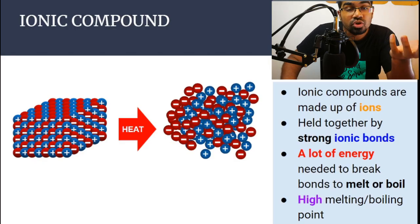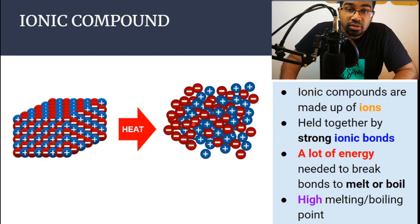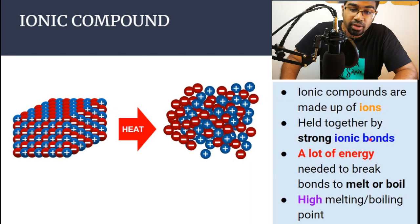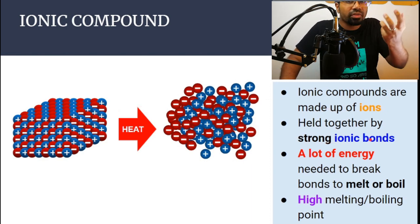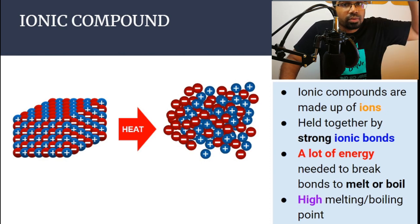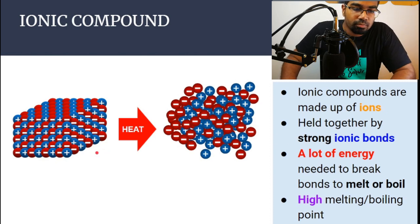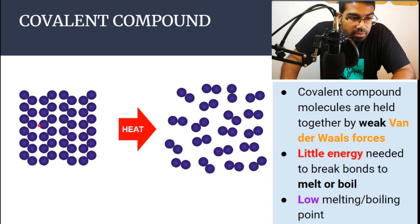For a substance to change its physical state we have to break the bonds holding the particles together. For ionic compounds they are held together by strong electrostatic forces or ionic bonds. Because these bonds are very strong, we need to put in a lot of energy to break them. When we need to put in a lot of heat energy to break the bonds, the melting point and boiling point will be high.